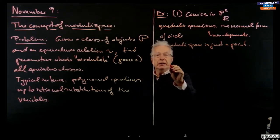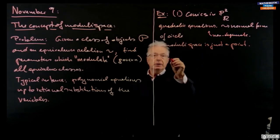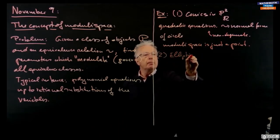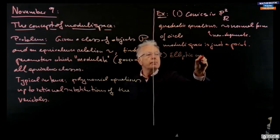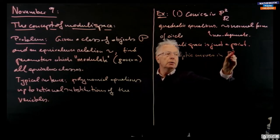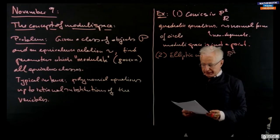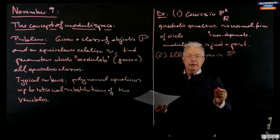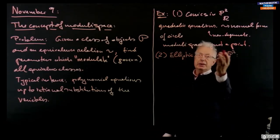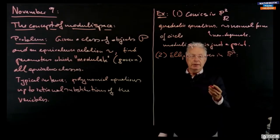In this case the problem does not appear, because you just have one element in your moduli space. The moduli space is just a point. That's not interesting. The second example was elliptic curves, again in P2, now maybe over any field.